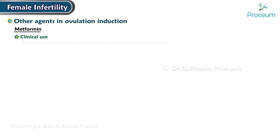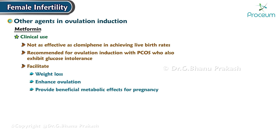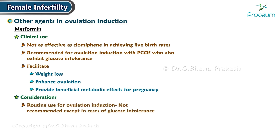Clinical use: Although not as effective as clomiphene in achieving live birth rates, metformin is recommended for ovulation induction in patients with polycystic ovarian syndrome who also exhibit glucose intolerance. It may facilitate weight loss, enhance ovulation, and provide beneficial metabolic effects for pregnancy. Considerations: The routine use of metformin for ovulation induction is not recommended, except in cases of glucose intolerance.